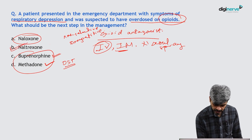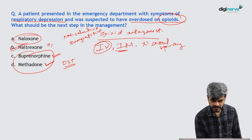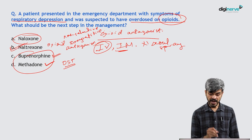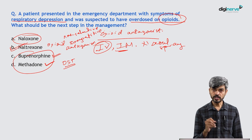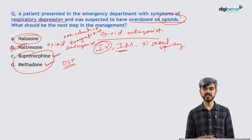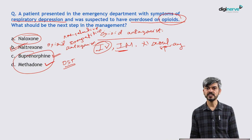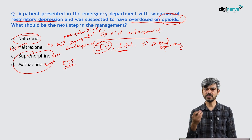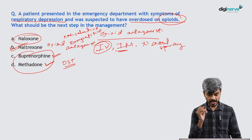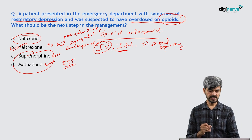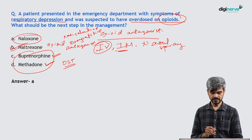Naltrexone is an opioid antagonist, but it cannot work as rapidly as Naloxone, and Naltrexone is usually an oral formulation. In a person who is in respiratory depression, you cannot give an oral tablet. So Naloxone preloaded syringe is used in this patient. The answer is A.